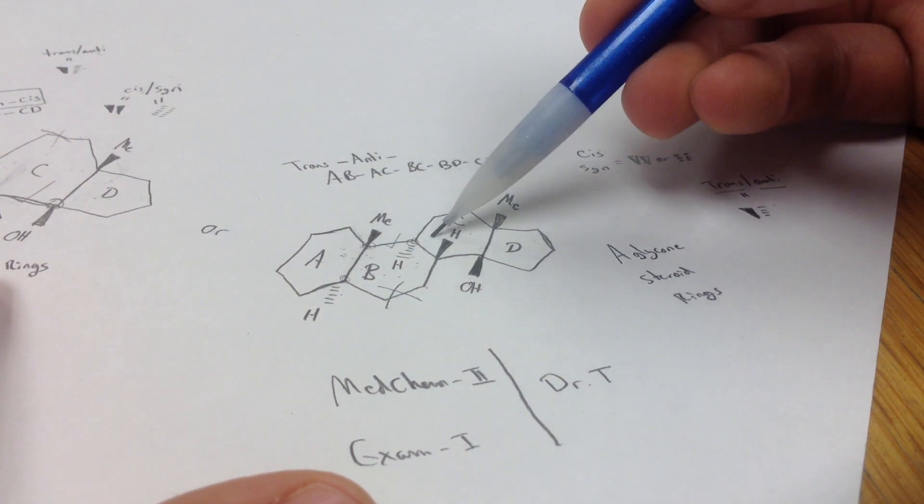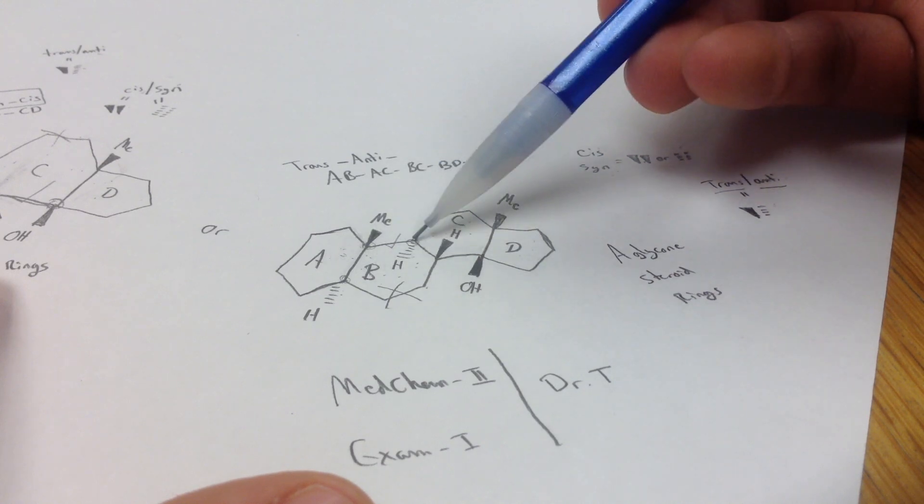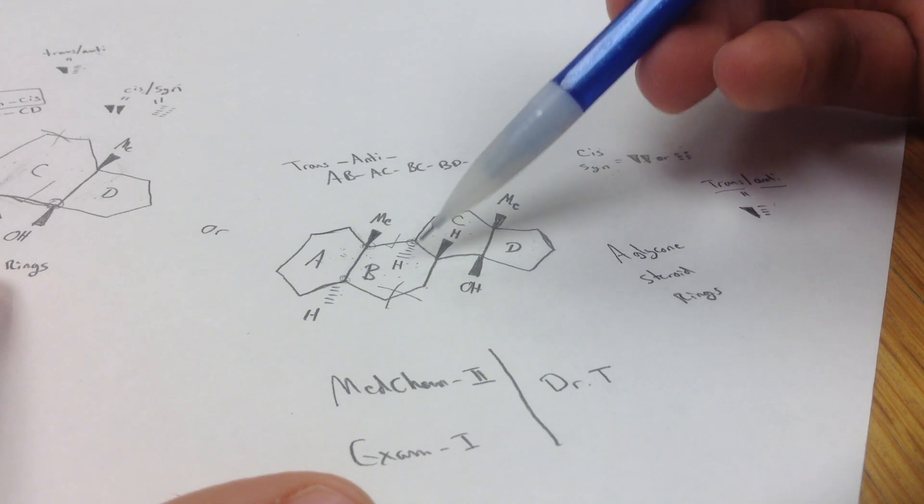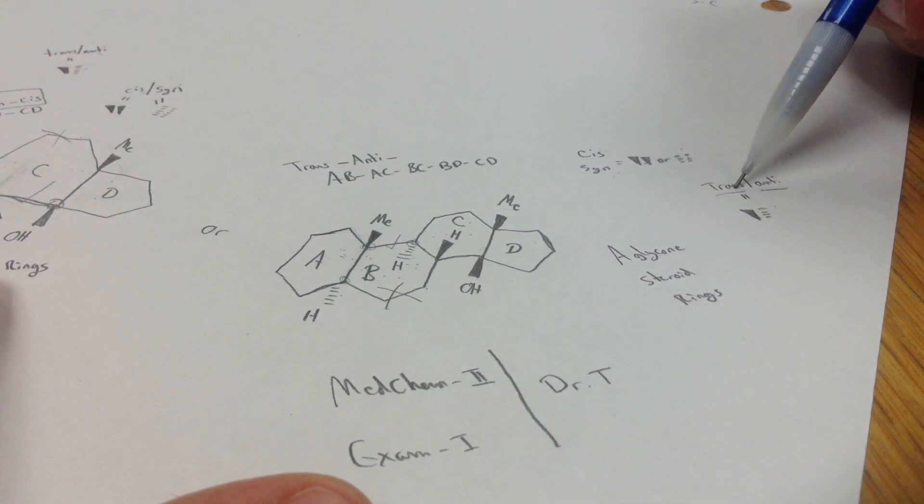And then you look at B and C, similar to A and B. You look in the middle here. You have this H that is shaded, and this H here that is dashed. So trans.